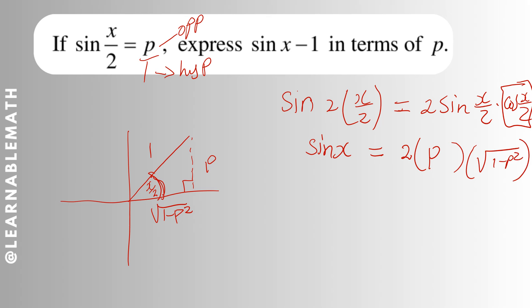Finally, they say express in terms of p, sin x - 1. I'll just subtract 1 on both sides, so sin x - 1 will be 2p√(1 - p²) - 1. This is sin x - 1 in terms of p. I hope you find this helpful. Don't forget to like, share, comment and subscribe. See you soon, bye.